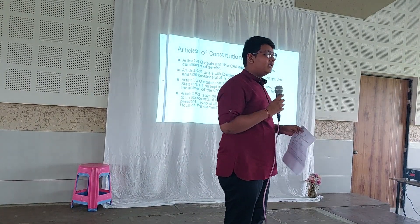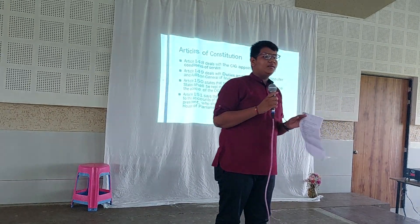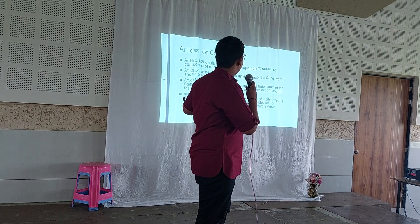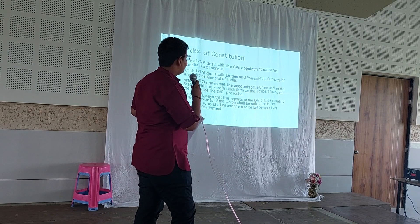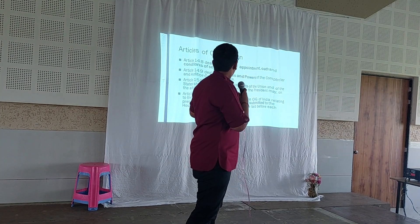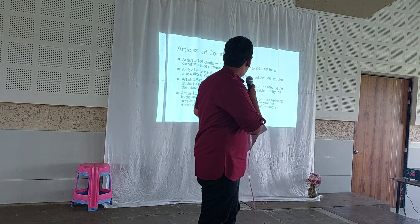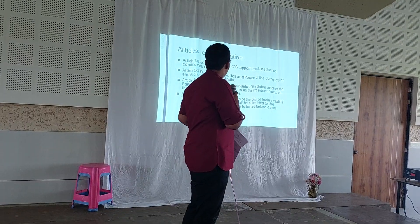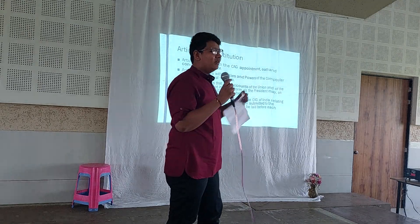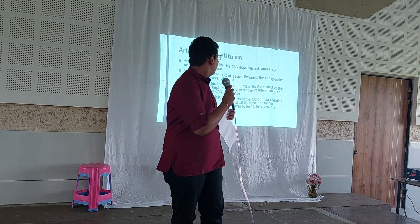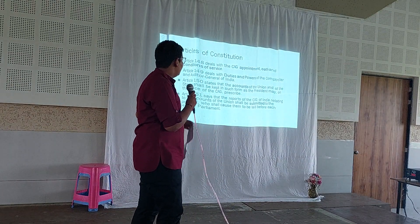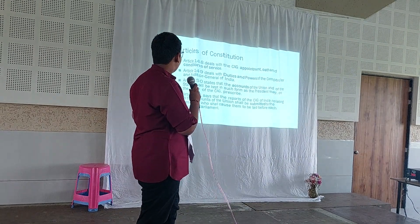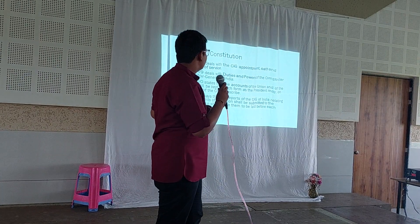As mentioned earlier, under Chapter 5, Articles 148 to 151, the CAG is appointed. These articles tell us about the powers and responsibilities of CAG. Article 148 deals with the appointment and oath of the CAG. Article 149 deals with the duties and powers of the CAG. Article 150 mentions the procedure of giving the audited accounts to the President. Article 151 states that the reports of CAG relating to the accounts of the Union shall be submitted to the President, who shall cause them to be laid before each House of Parliament.